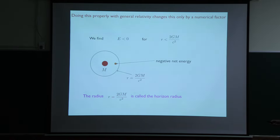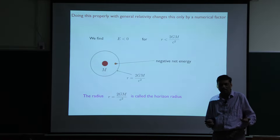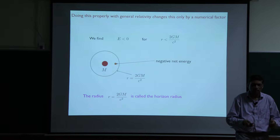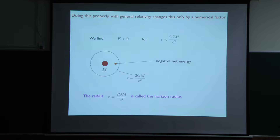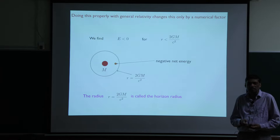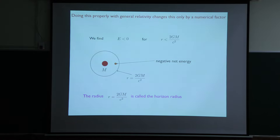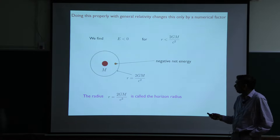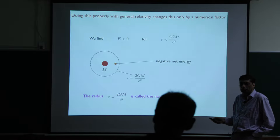I should do this properly using general relativity, because once you have gravity and special relativity together they lead to general relativity. If you do it properly with GR it doesn't change much — you still get the same effect once you are closer than a distance of GM over c squared; you just get an extra factor of two. The gravitational potential energy is so much that it can outstrip the mc squared, and you can get a particle with net negative energy. This particular radius is called the horizon radius, and inside it the net energy of a particle can actually be negative — you can effectively create a particle there for free.